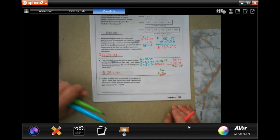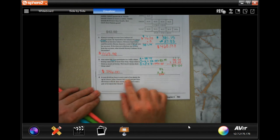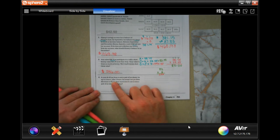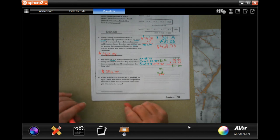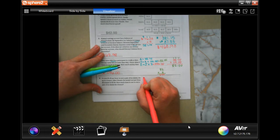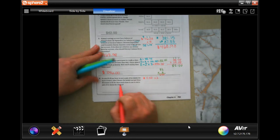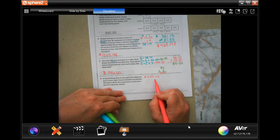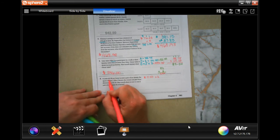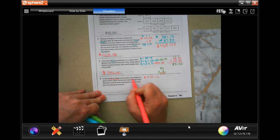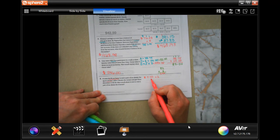Alright, now it costs $5.50 an hour for two hours, so we have to multiply that by two.